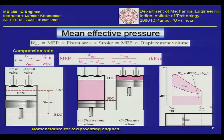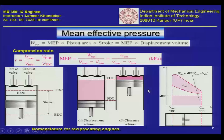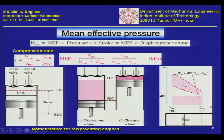In today's class we are going to understand what is mean effective pressure of a thermodynamic cycle work-producing engine. Coming to this diagram, we have made 3 diagrams. Let us quickly go through all 3 of them. The first thing: this is an intake valve, this is an exhaust valve, and this is the stroke of the engine.